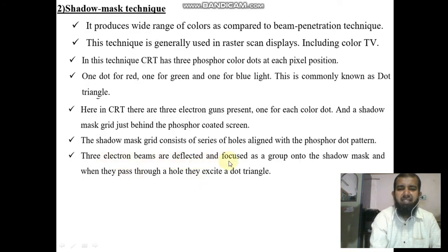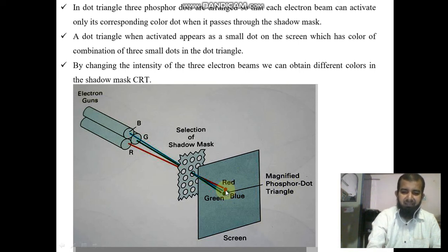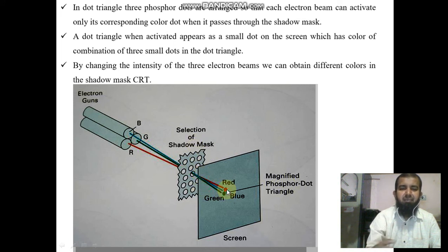Three electron beams are deflected and focused as a group onto the shadow mask, and when they pass through a hole they excite a dot triangle. The beam penetrates through the shadow mask and then displays on the phosphor, forming one color pixel.